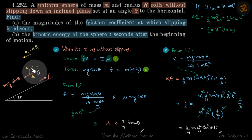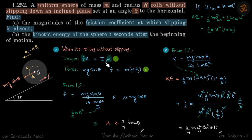We are assuming rolling is happening, so a = alpha·r. Therefore, torque: F·r = I·alpha, and mg·sin(theta) - F = M·alpha·r. We have two equations and two variables, so let's find F first since we need that.